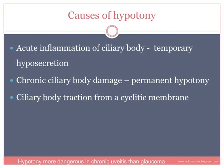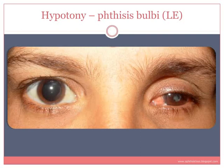The eye in uveitis can have a normal, high, or low pressure. Causes of hypotony include acute inflammation of the ciliary body causing temporary hyposecretion, sometimes becoming permanent due to chronic ciliary body damage, or ciliary body traction from a cyclitic membrane. Permanent hypotony is extremely dangerous and results in permanent loss of vision — hypotony is in fact more dangerous in chronic uveitis than glaucoma. This photo shows a patient with a small shrunken left eye and a normal right eye; the left eye is soft, sightless, and sunken — this eye is phthisis bulbi.